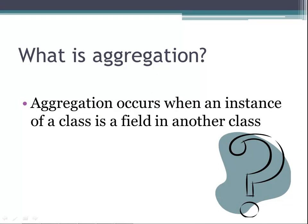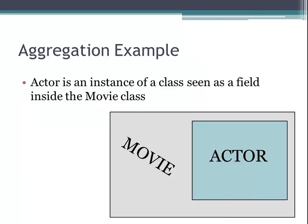What is aggregation? Aggregation occurs when an instance of a class is a field in another class. An example of aggregation is that actor is an instance of a class seen as a field inside of the movie class.